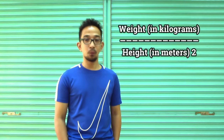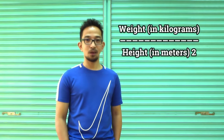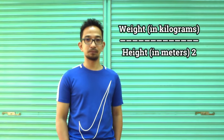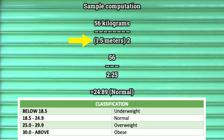This is the formula for computing body mass index: weight in kilograms over height in meters squared. For example, your weight is 56 kilograms and your height is 1.5 meters. Find the square of your height: 1.5 meters multiplied by 1.5 meters equals 2.25.